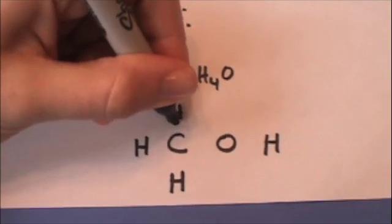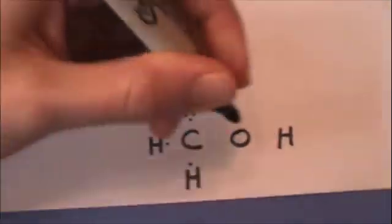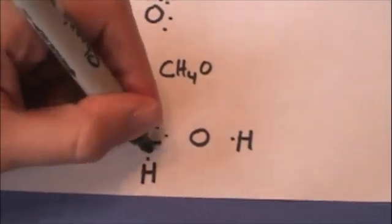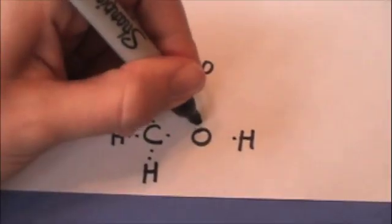So now let's put in our valence electrons. Hydrogens each have one. Carbon has four. Oxygen has six.